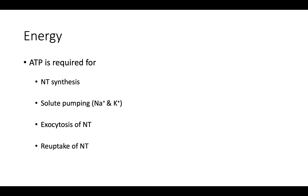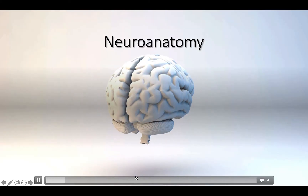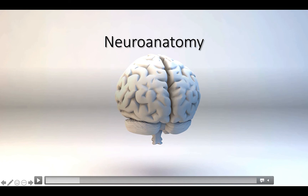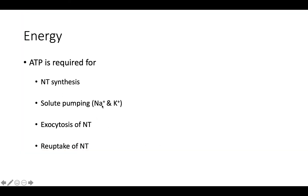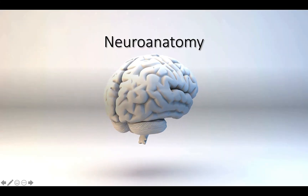ATP is required at multiple steps in synaptic function: the production of neurotransmitters, pumping sodium and potassium to maintain the electrical gradient, exocytosis of neurotransmitters into the synaptic cleft, and reuptake of neurotransmitters back into the presynaptic terminal. This is why your brain and the rest of your nervous system require energy — you need to communicate across all those neurons regularly, so ATP must continually be supplied.